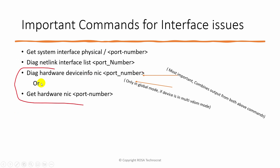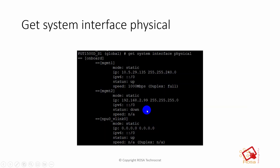The third command is 'diag hardware device info nick,' which gives all possible information related to the interface. This command and 'get hardware nick' give almost exactly the same output, so you can use either one. One difference is that 'diag hardware device info nick' works only in global mode in a multi-VDOM environment, whereas 'diag netlink' and 'get system interface' work within a particular VDOM.